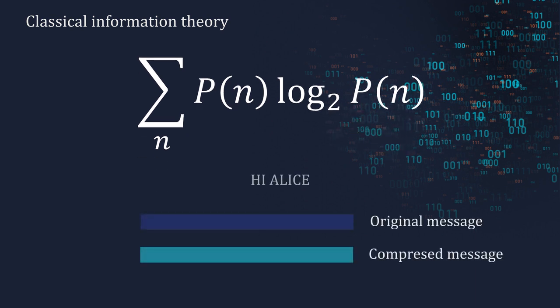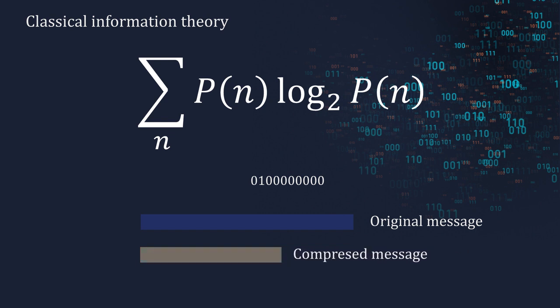As an example, the message HI ALICE cannot be compressed, but if we had a letter with a much higher probability as in the second message, then we can reduce its length without reducing the transmitted information.